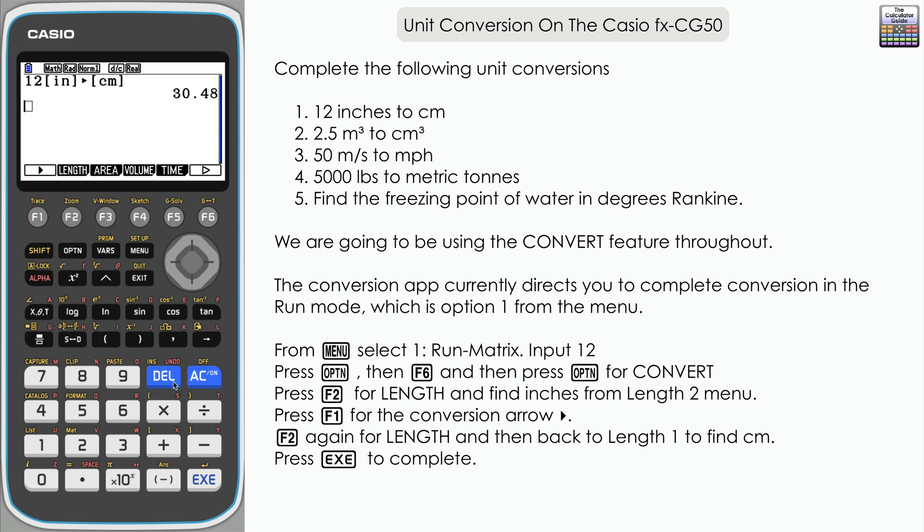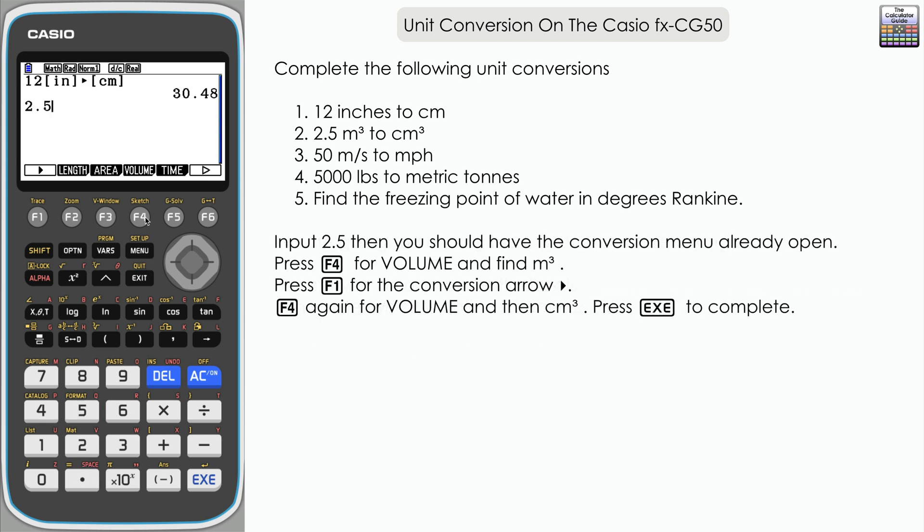Example 2 then: 2.5 meters cubed to centimeters cubed. So 2.5. Now this is a unit of volume so it's F4 for volume. Both metric this time, so we've got 2.5 meters cubed option 4, F1 for the conversion arrow, volume and then 1 for centimeters cubed. Press execute and here we have our answer, 2.5 million centimeters cubed.